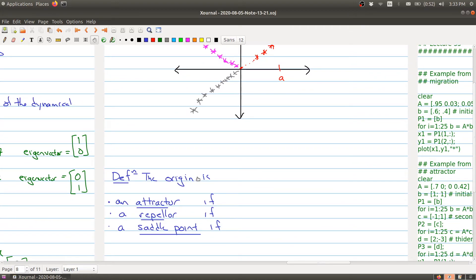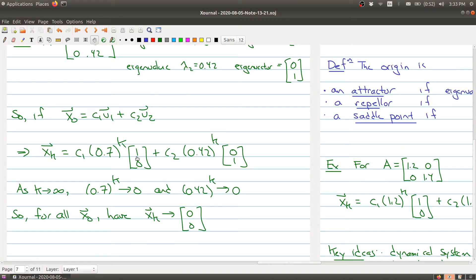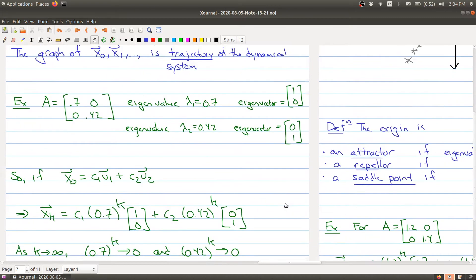So the origin is an attractor if all the eigenvalues are strictly less than 1. And that kind of makes sense because like in our example right here, if these guys are less than 1, then no matter where you start, you're going to end up at the origin.